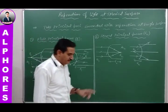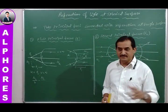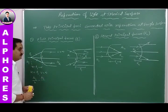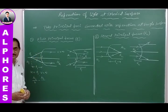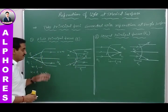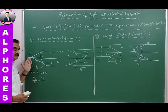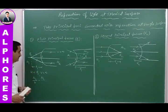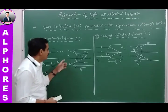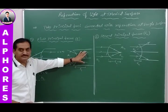Every spherical refracting surface has two focus points. The first principal focus is defined as the point from which light rays diverge, or towards which light rays converge, such that after refraction these light rays become parallel to the principal axis. That point is known as the first principal focus.